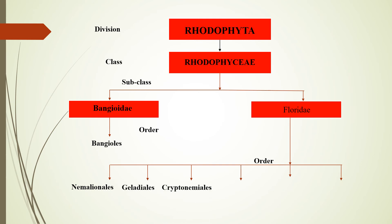We will be concentrating only on Nemalionales and Ceramiales. In both Nemalionales and Ceramiales there is formation of carpospores. In Nemalionales, carpospores are haploid, whereas in Ceramiales, carpospores are diploid. Carpospores are formed as a result of meiosis in Nemalionales — the zygote undergoes meiosis and produces haploid carpospores. Whereas in Ceramiales, the zygote does not undergo meiosis but undergoes mitosis, producing diploid carpospores.